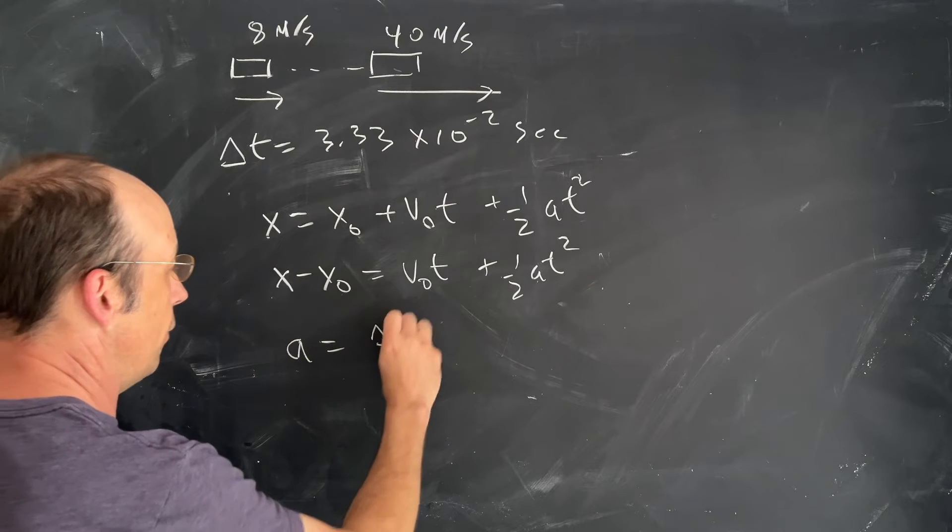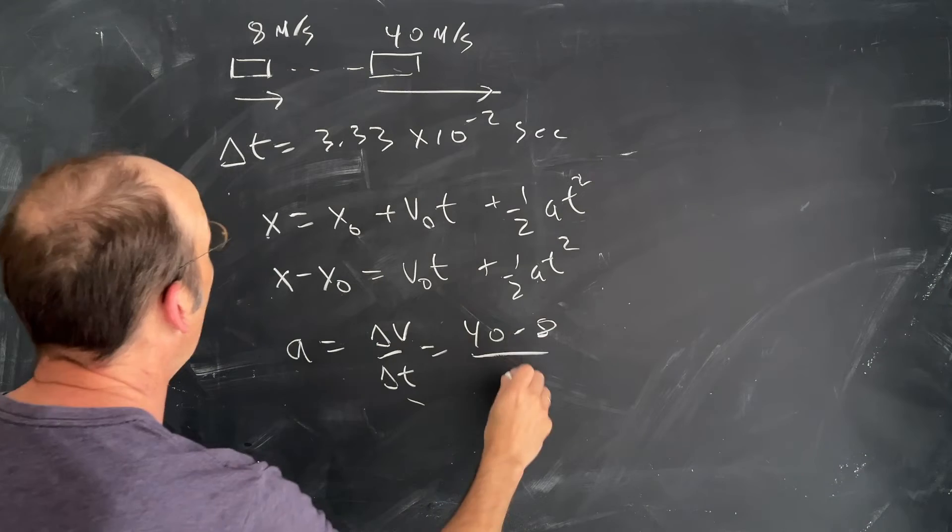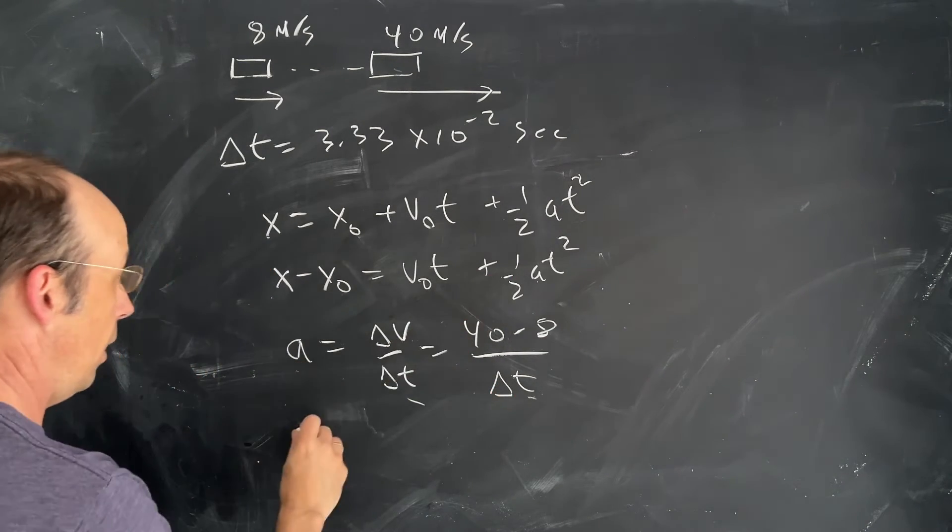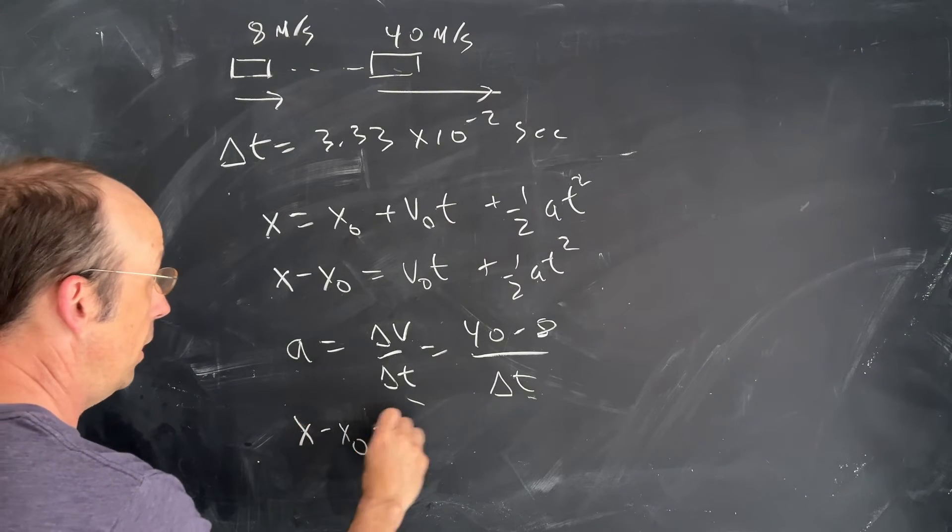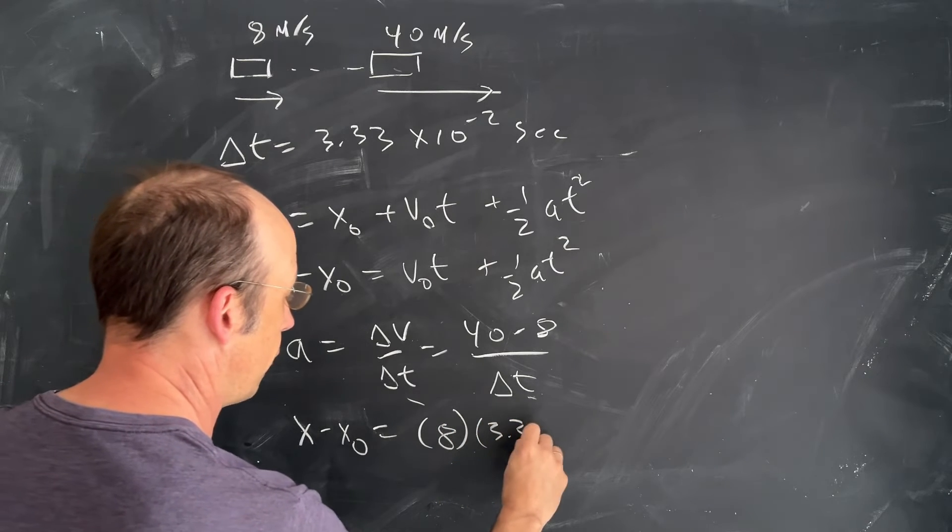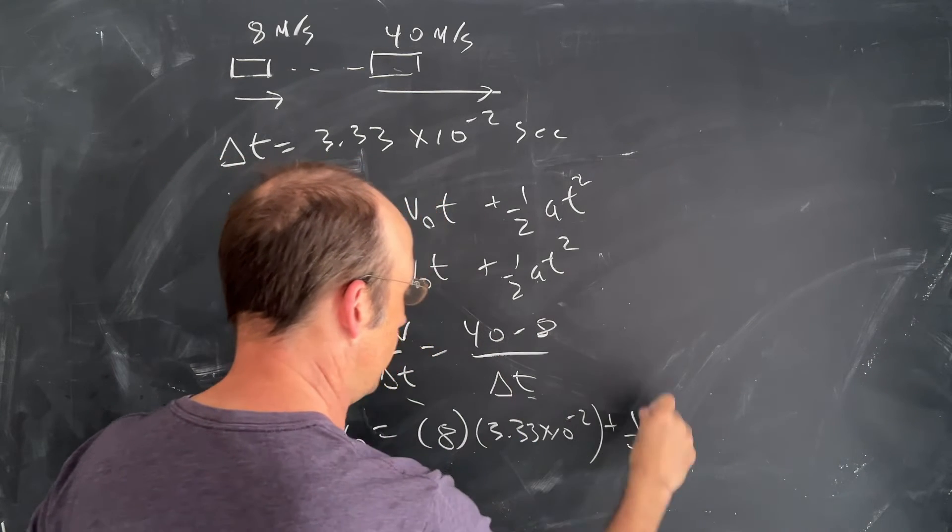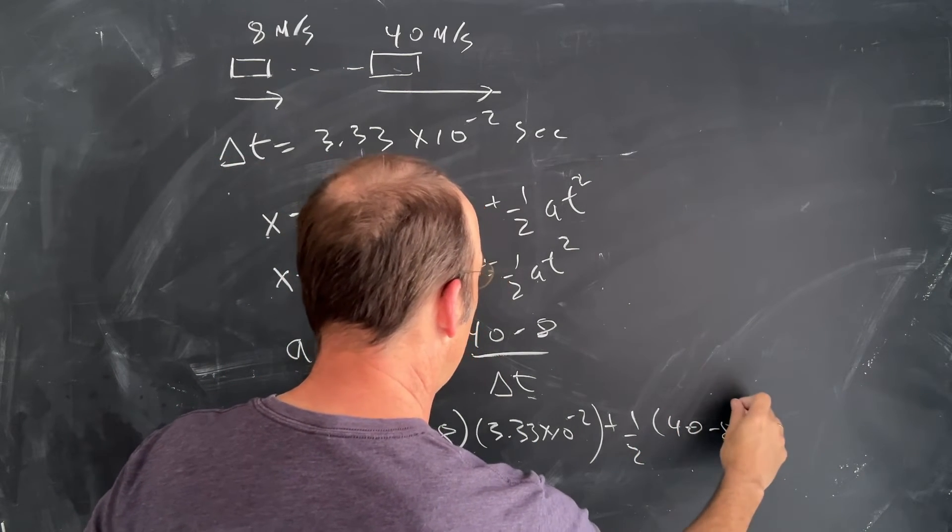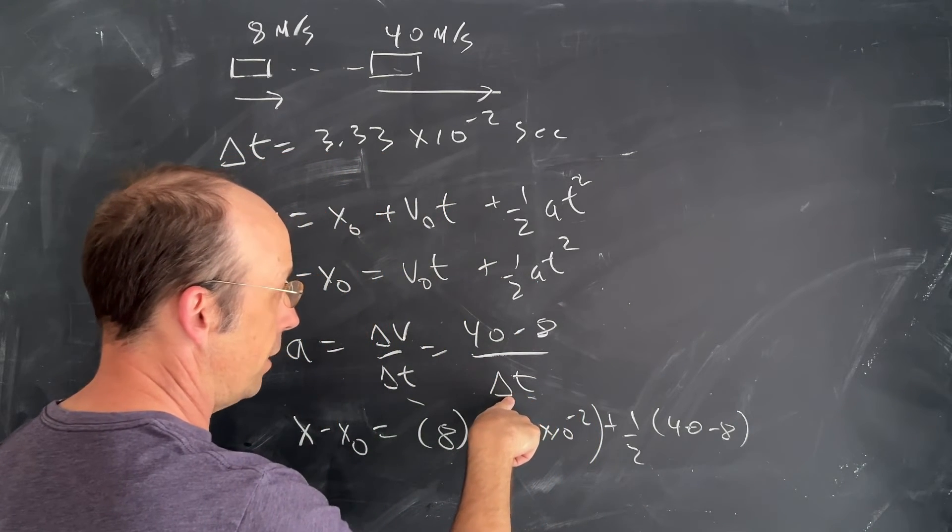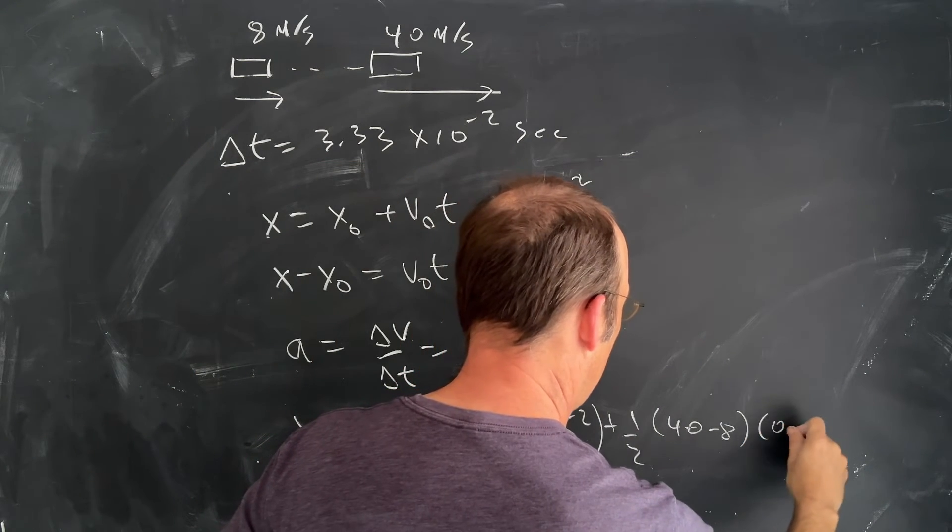a is going to be delta v over delta t. So that's 40 minus 8 over delta t, which I'll just leave it like that right now. And if I put that in up here, I get x minus x0 is going to be the initial velocity. I'll just put in my numbers: 8 times the time interval, 3.33 times 10 to the negative 2 plus 1 half times 40 minus 8 over delta t, but I have delta t squared on the top. So I just get a delta t up here of 0.33.